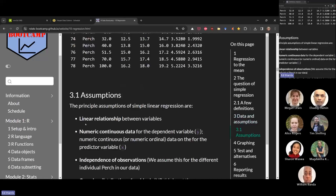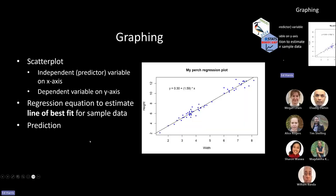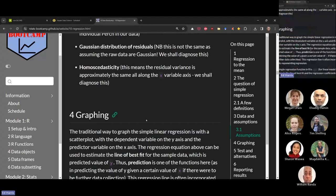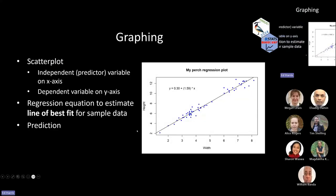Let's go back to the slides and then get to graphing. The traditional way to graph a simple linear regression is to plot the dependent variable on the Y axis of a scatterplot and the predictor variable on the X axis. Here we're going to graph the height variable as a function of the width variable. It's also traditional for simple linear regression to put the regression line on our scatterplot. And in some disciplines, it's traditional to print out the parameters for the equation of that line.